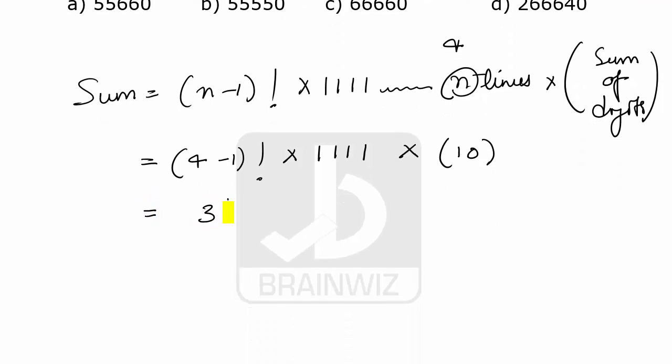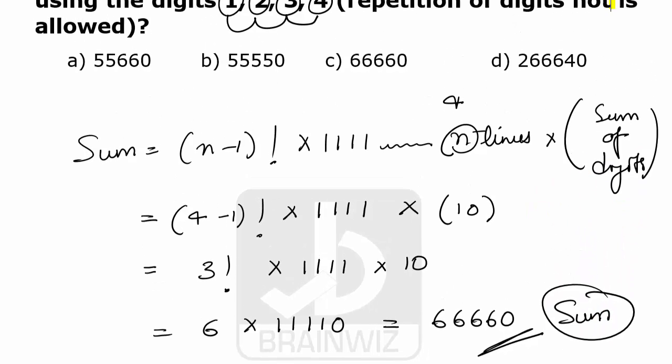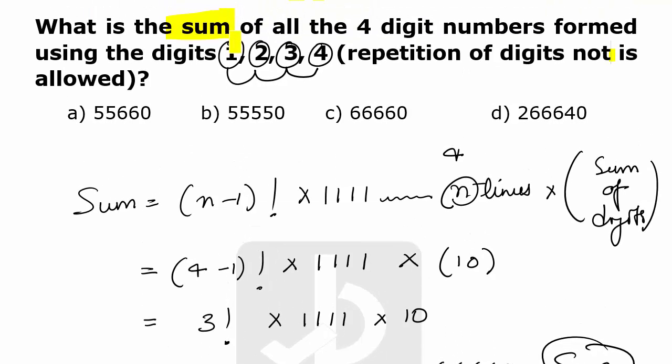Now we all know this is 3 factorial, 1111 into 10. That makes 6 into 11110, which makes 66660. So this is the sum of all the numbers which are formed using 1, 2, 3, 4.